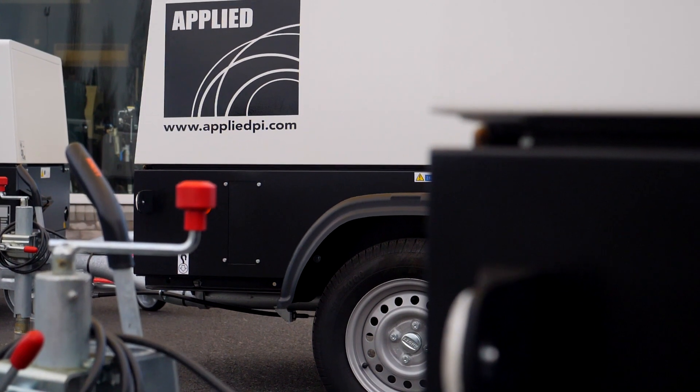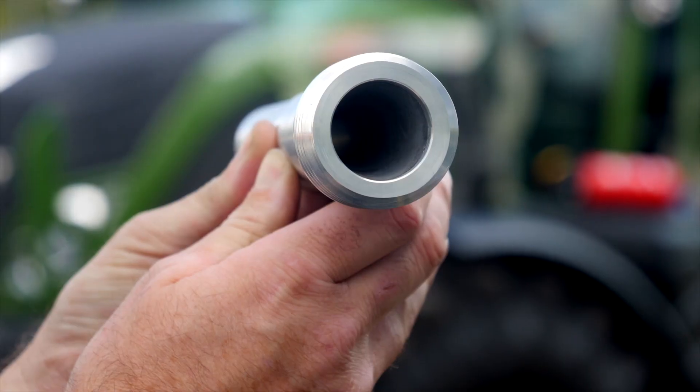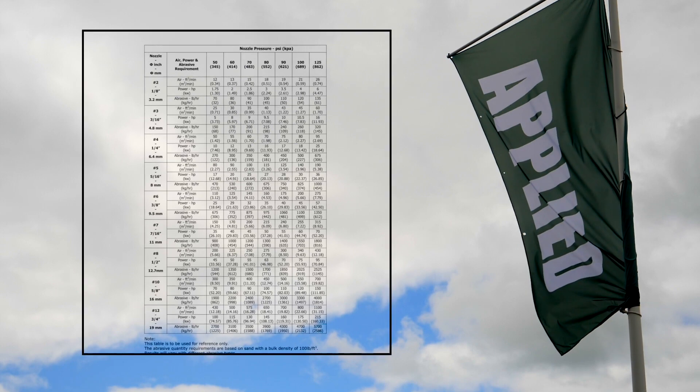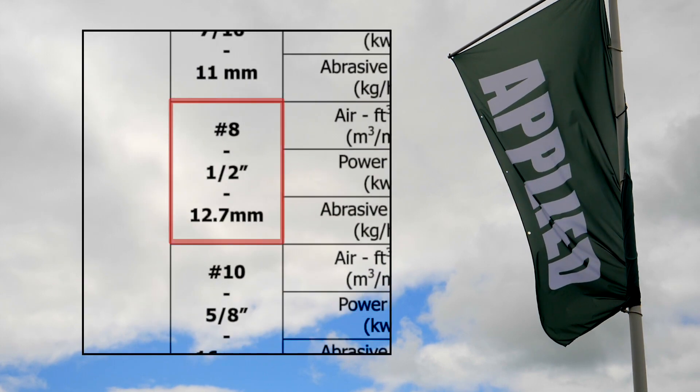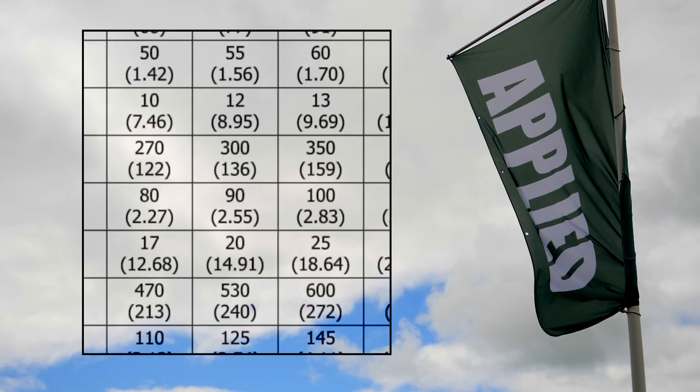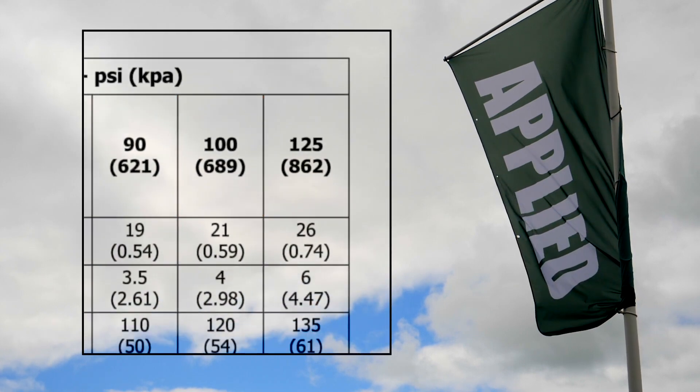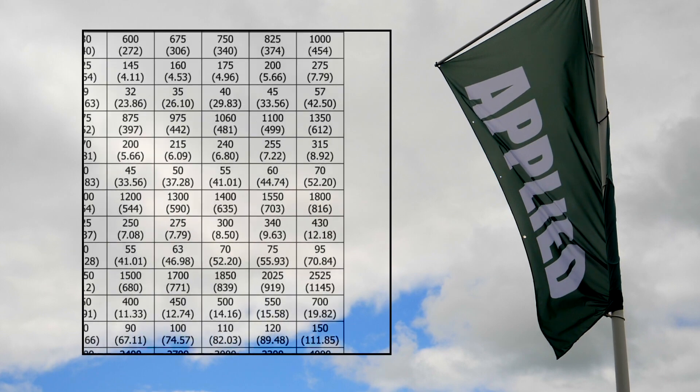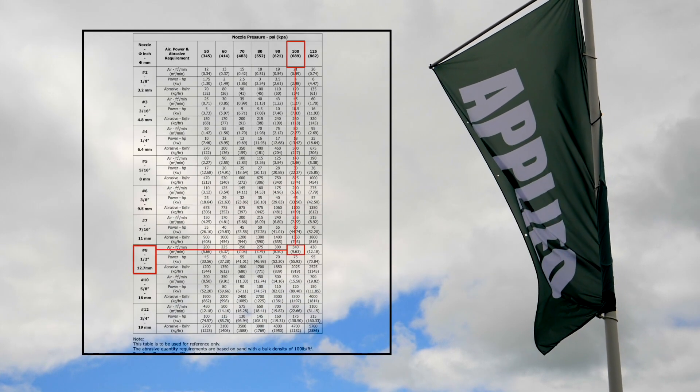To show how to measure the output of an air compressor, we will use Applied Blasting nozzles and an Applied Blasting machine. To power a 12.7mm blast nozzle at 100 psi, 340 CFM of air is required, as can be seen from the International Blast Nozzle Pressure Chart.